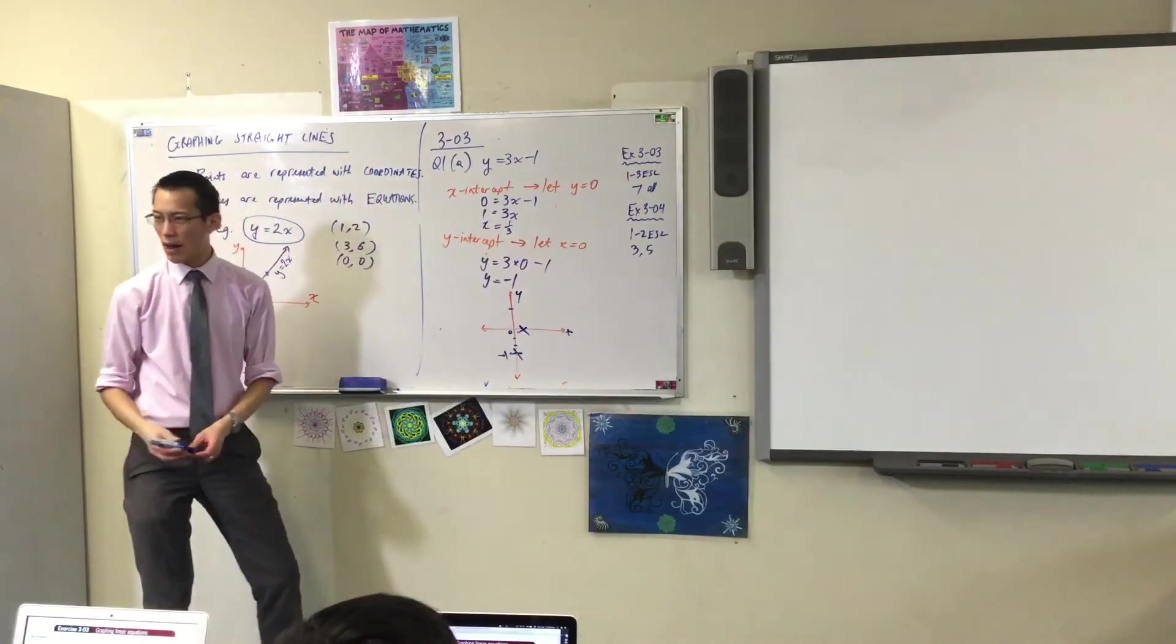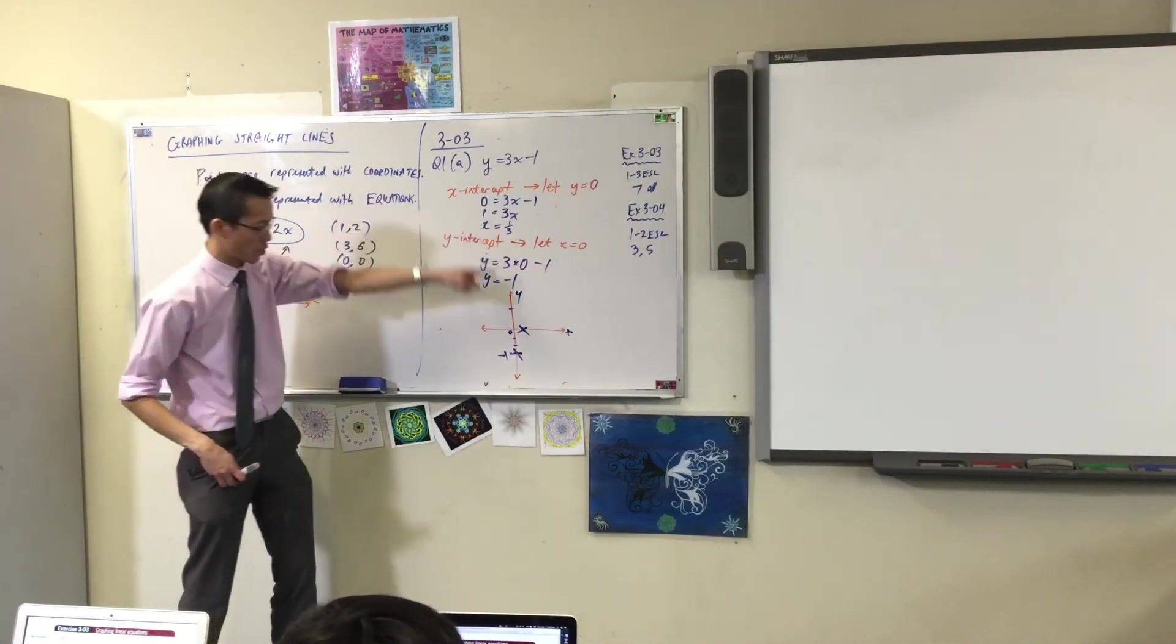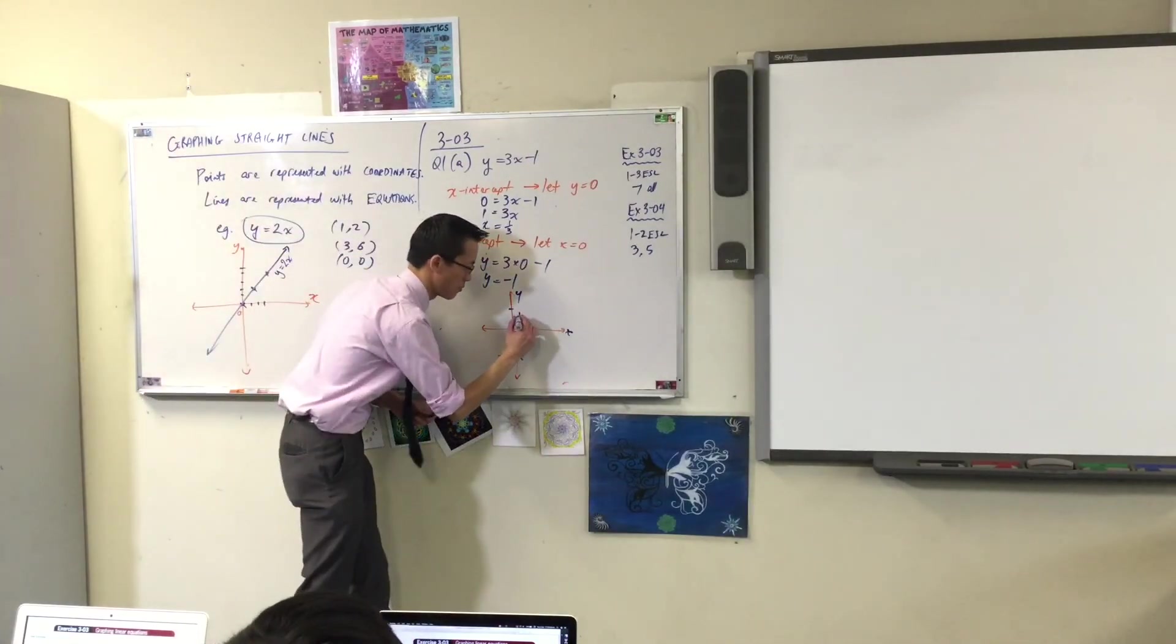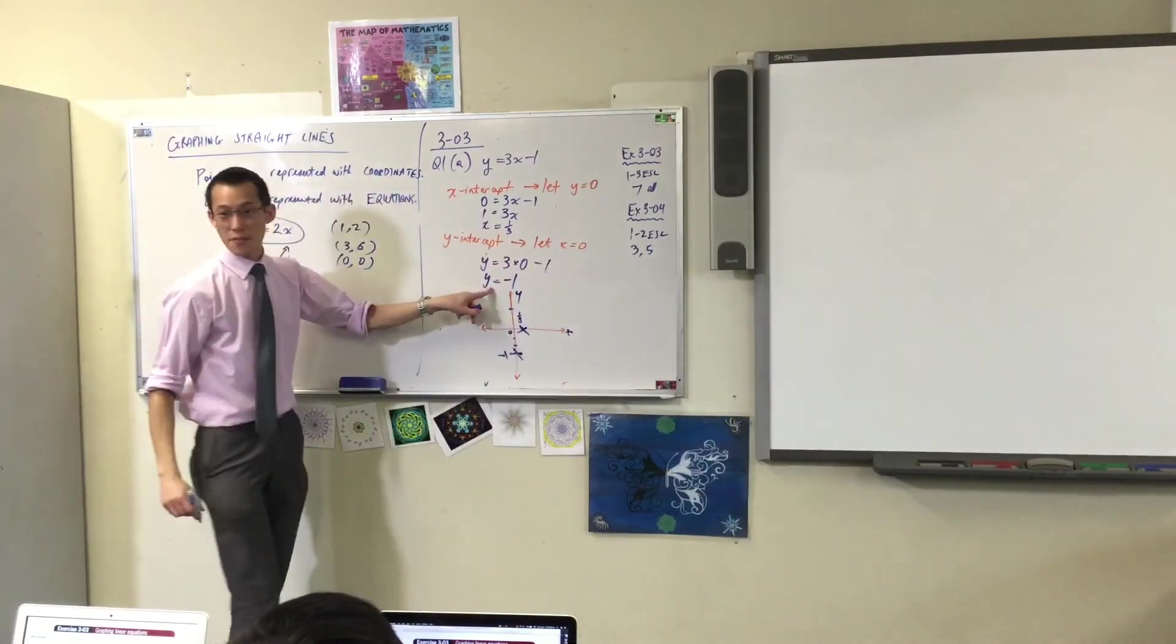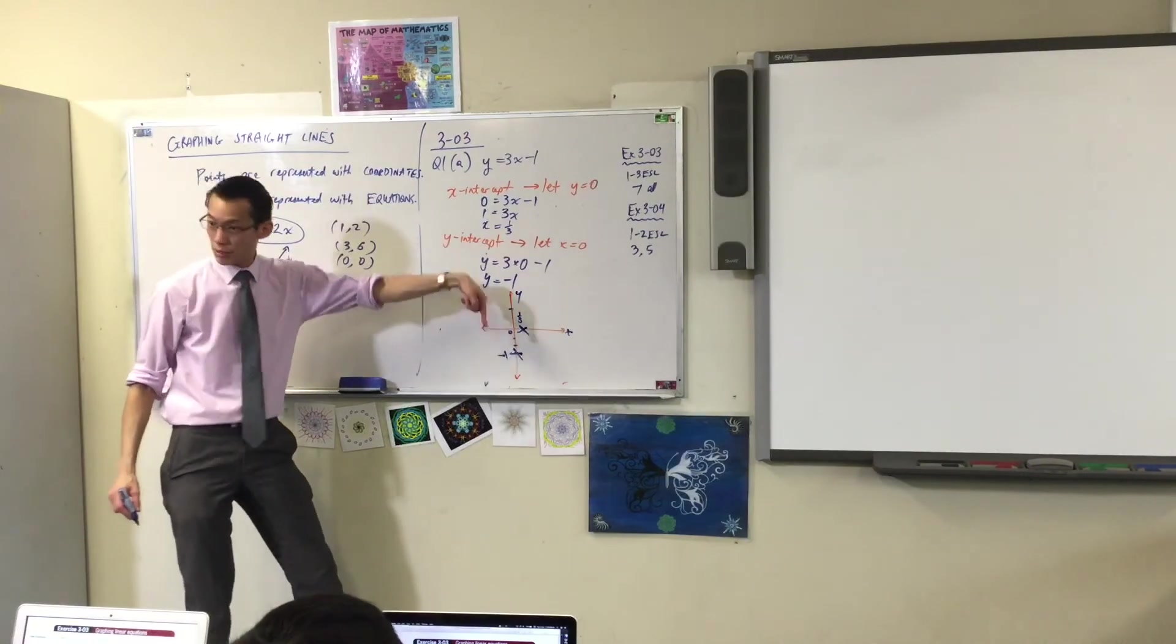Do you see how I've used this information, x equals 1 third, to put it there? I should label that too. And I've used this information to say y equals negative 1. It's down the bottom.